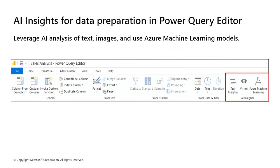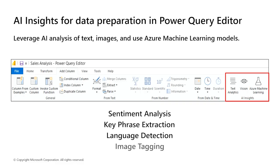The AI insights feature allows us to connect to a collection of pre-trained machine learning models that we can apply to the data, enhancing our data preparation efforts. Access AI insights in the Power Query Editor; the associated features and functions are accessed through the Home and Add Column tabs. With text analytics and vision in Power BI, we can apply different algorithms from Azure AI services like Azure AI Foundry, enriching data in Power Query. The services supported today are: sentiment analysis, key phrase extraction, language detection, and image tagging.